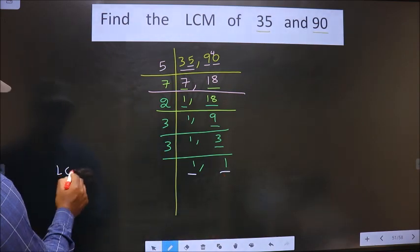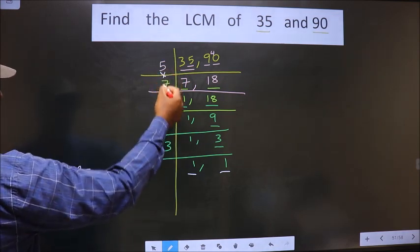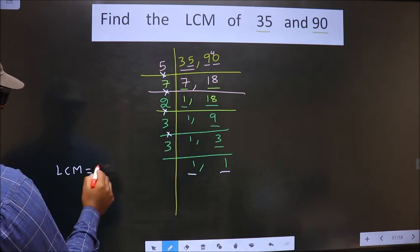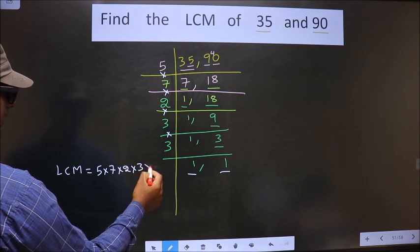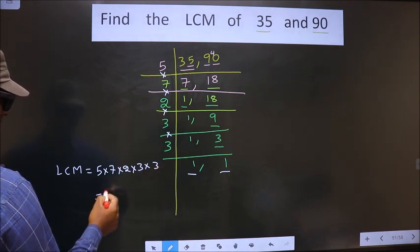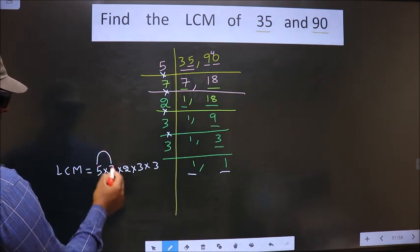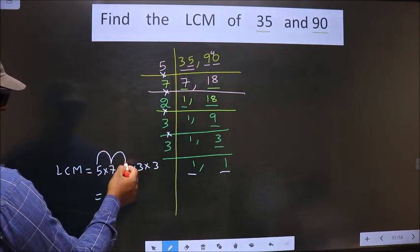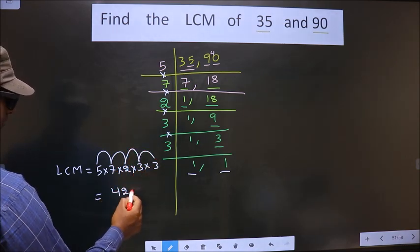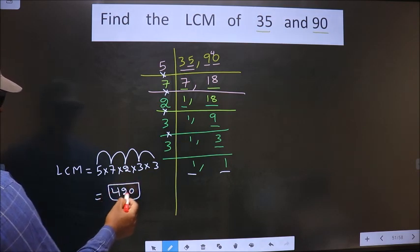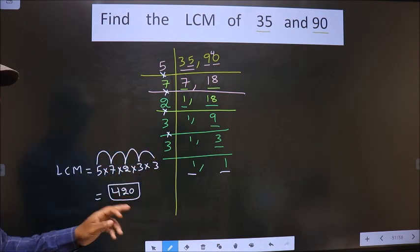So now our LCM is the product of these numbers. That is 5 into 7 into 2 into 3 into 3. So let us multiply all these numbers. 5 into 7 is 35. 35 into 2 is 70. 70 into 3, 210. 210 into 3, 420 is our answer. Am I clear?